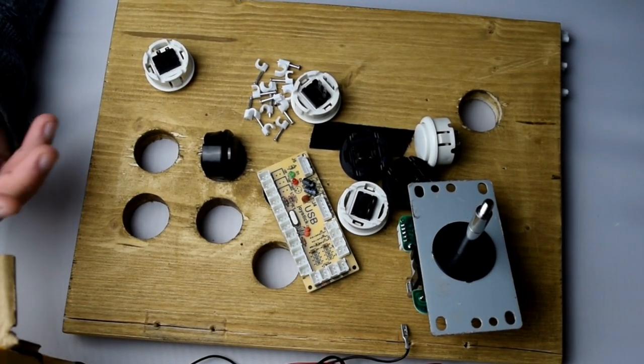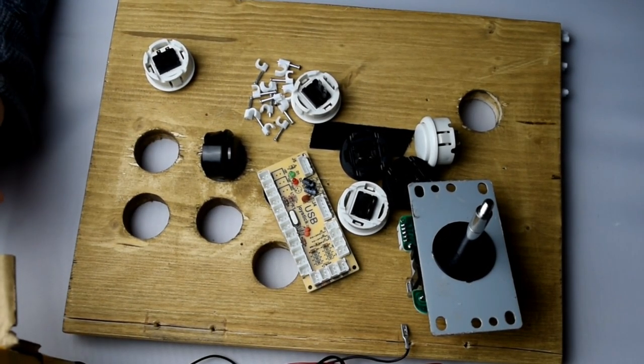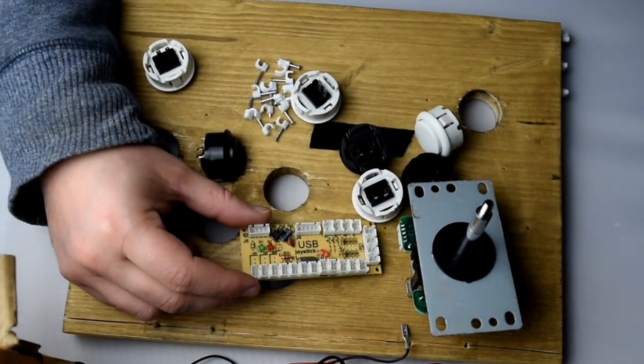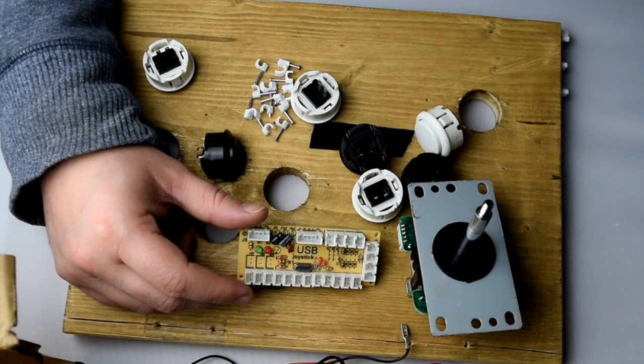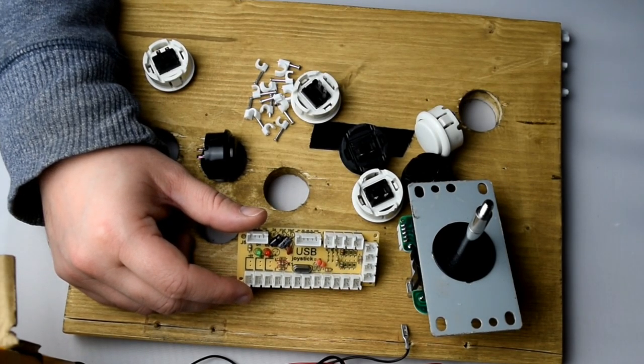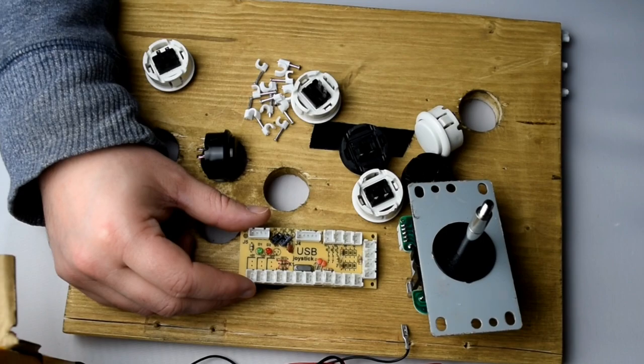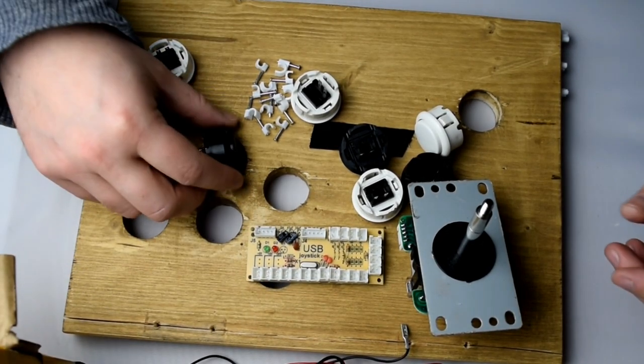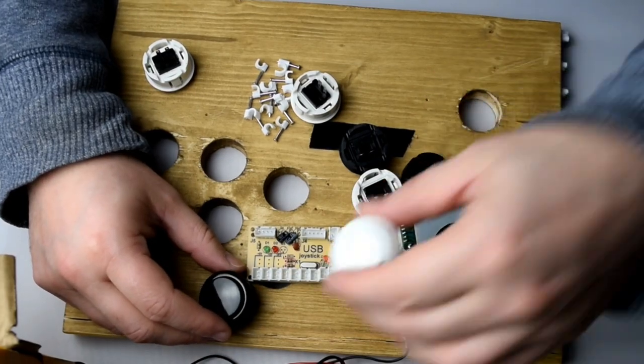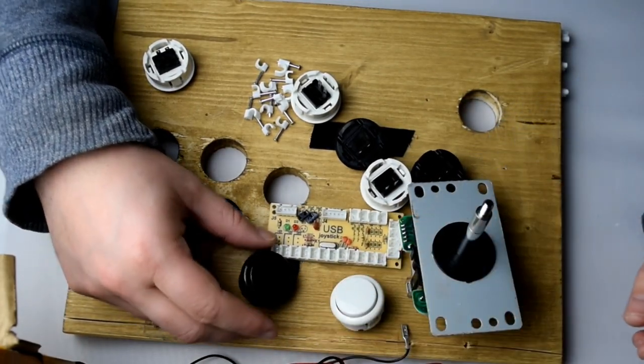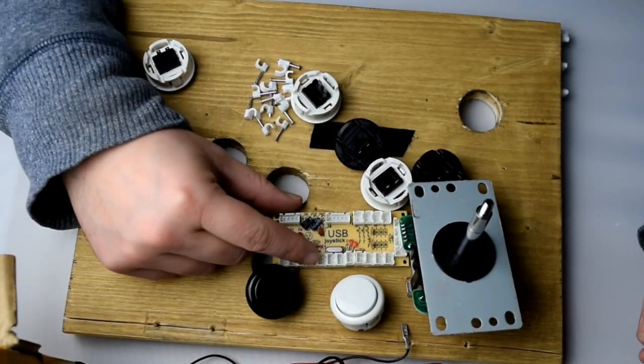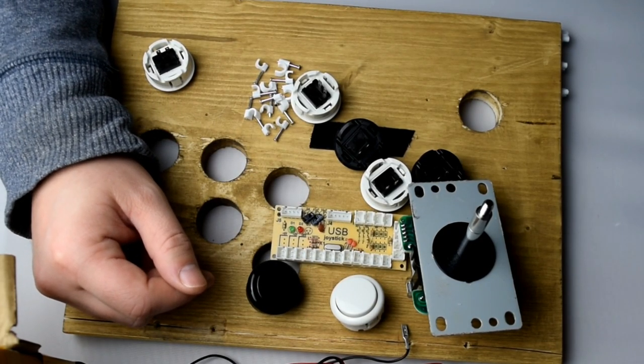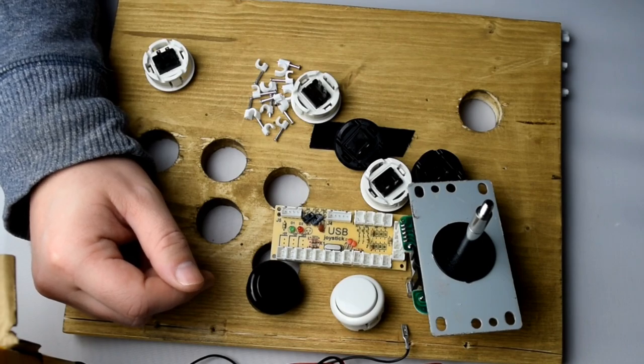Here we have what we call a USB encoder. These are really quite generic encoders and you can find them on Amazon or eBay. They're relatively quite cheap, and basically this just plugs in all your arcade-style buttons and converts it into a USB signal that your computer or Raspberry Pi can understand.